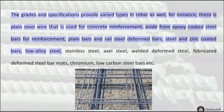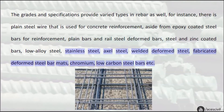The grades and specifications provide varied types in rebar as well. For instance, there is plain steel wire used for concrete reinforcement, aside from epoxy coated steel bars for reinforcement, plain bars and rail steel deformed bars, steel and zinc coated bars, low alloy steel, stainless steel, axle steel, welded deformed steel, fabricated deformed steel bar mats, chromium, and low carbon steel bars etc.